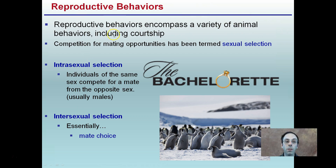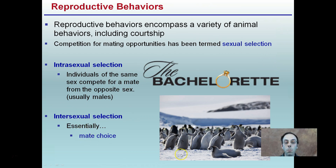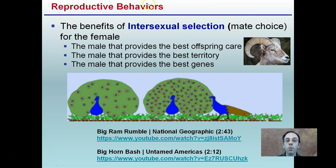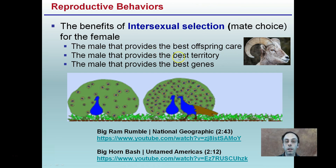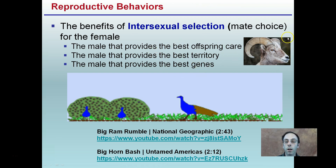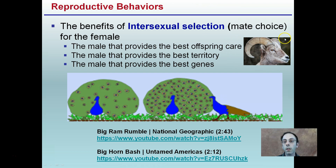Reproductive behaviors encompass a variety of animal behaviors including courtship. Competition for mating opportunities has been termed sexual selection. Intrasexual selection is where individuals of the same sex compete for a mate from the opposite sex — this is usually males. Intersexual selection is essentially mate choice, where the female is able to select which mate she would like. With rams, for example, they will butt heads until the alpha male is determined, and the alpha male gets the rights to the female.